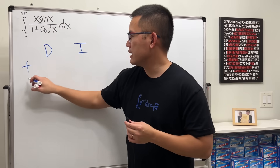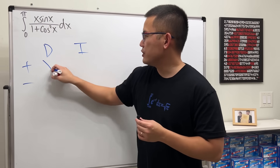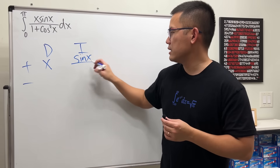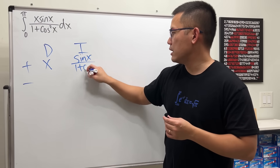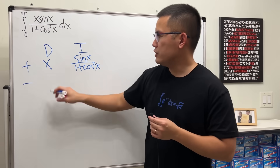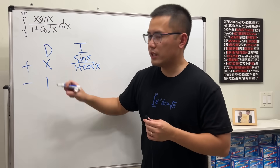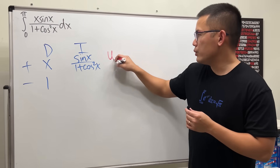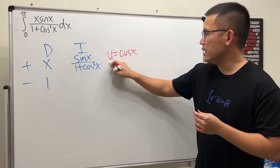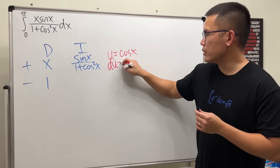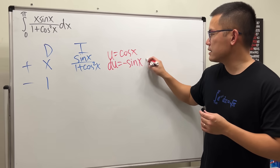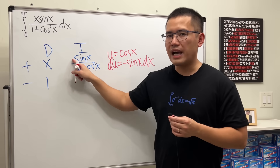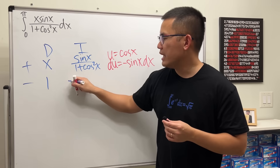Put on the DI table: plus, minus. I will be differentiating x and integrating the rest. Differentiating x gives us 1. For integrating, we let u = cos x, so du = −sin x dx.